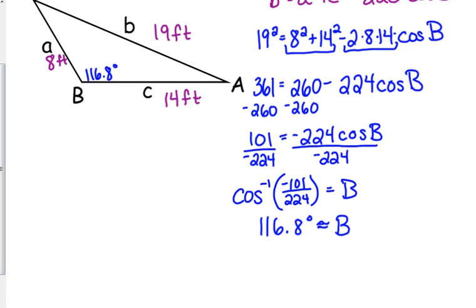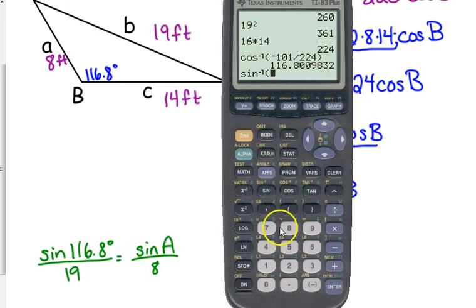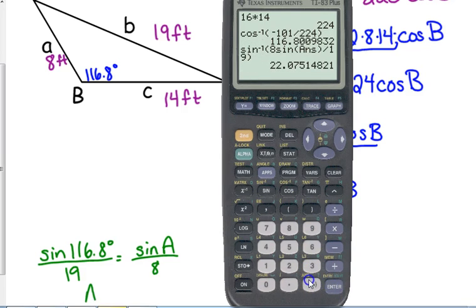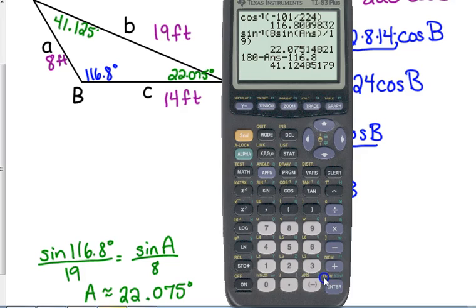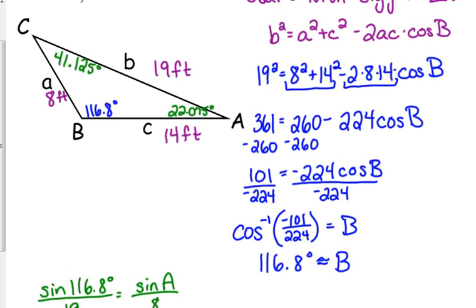Now we can use the law of sines. And we want to go next to the smallest angle. So sine of 116.8 degrees over 19 is equal to, we're going to find angle A. Because it's across from the next smallest side. Or actually the smallest side. So, the inverse sine of 8 sine of the answer we just got over 19. So, A is approximately 22.075 degrees. And then we just need to subtract those two from 180 to get our third angle. 41.125 degrees. And a quick check. We'll confirm. Smallest side, smallest angle, biggest side, biggest angle. We're good.